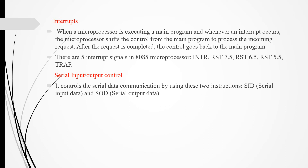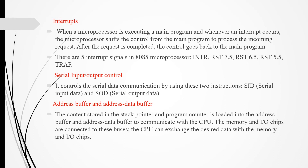Another important unit is serial input/output control. It controls serial data communication using two instructions: SID and SOD. SID means serial input data, where data is given to the microprocessor serially, and SOD means serial output data. The content stored in the stack pointer and program counter is loaded into the address buffer and address/data buffer to communicate with the CPU. Memory and input/output chips are connected to these buses, and the CPU can exchange the desired data with them.